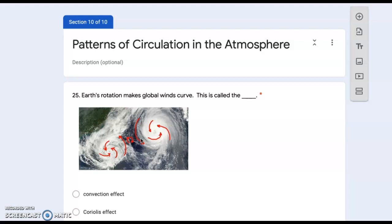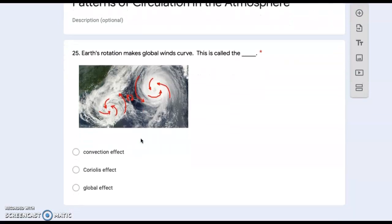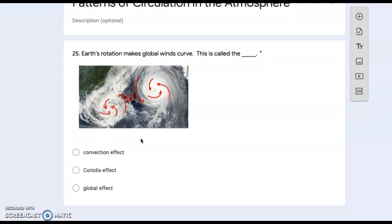Patterns of circulation in the atmosphere. Twenty-five: Earth's rotation makes global winds curve. This is called the convection effect, Coriolis effect, or global effect?